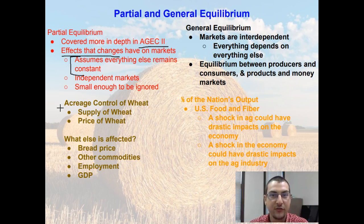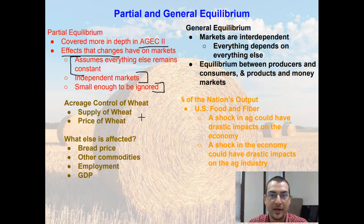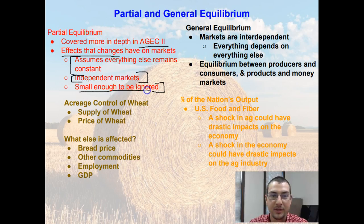So partial equilibrium is going to look at just specific markets, assuming that all markets are independent of each other and that those markets are small enough that they can be ignored. Such as how would a change in wheat price affect the price of bread? They're saying those markets are going to be independent and any effects that do occur are small enough to be ignored.